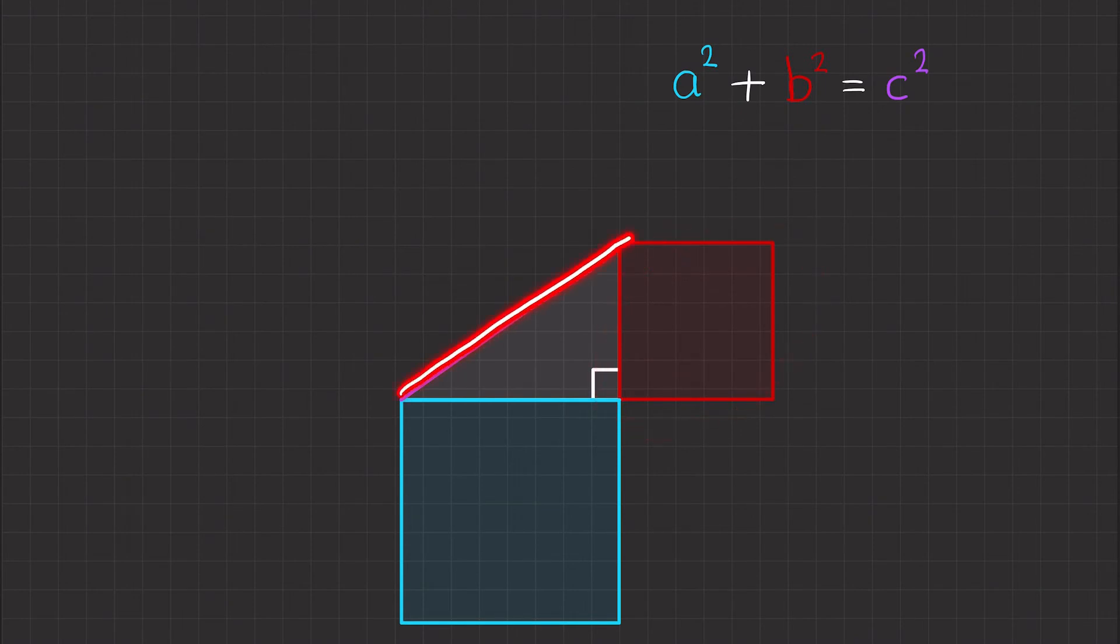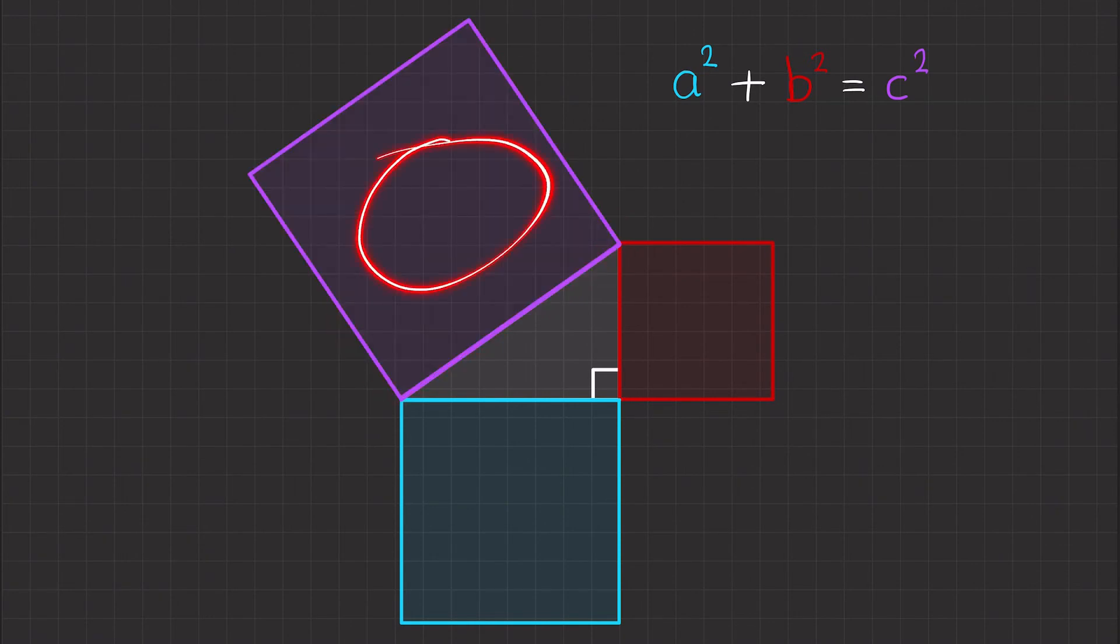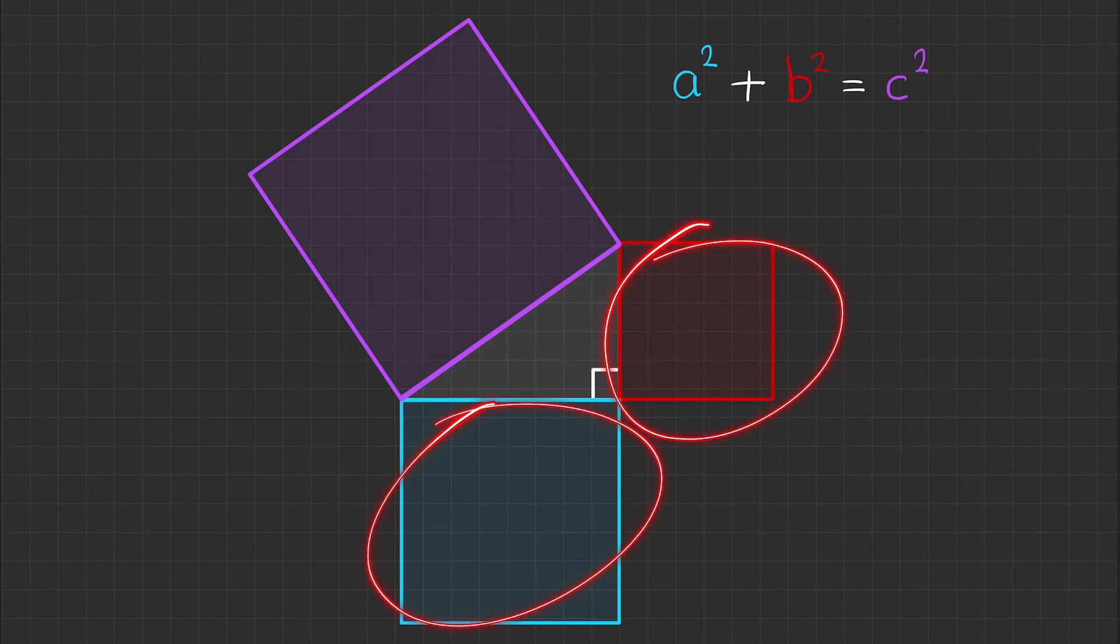Lastly, let's make a square using the length of the hypotenuse. And that will give us this area of C squared. So we've got area A squared, B squared and C squared.